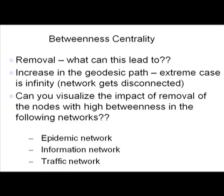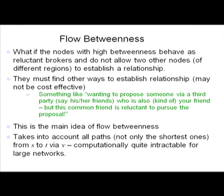Similarly, in a traffic network, if a particular road is the only connecting road between two different geographies and there is a blockage in that road, the entire traffic flow from one region to the other will get disturbed. These kinds of nodes are important in various different contexts. That is all about betweenness centrality.